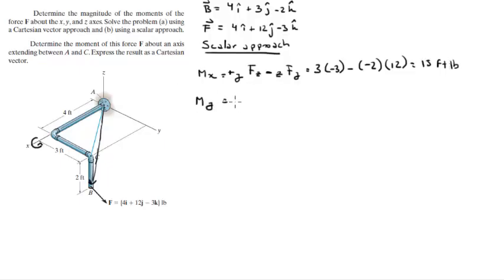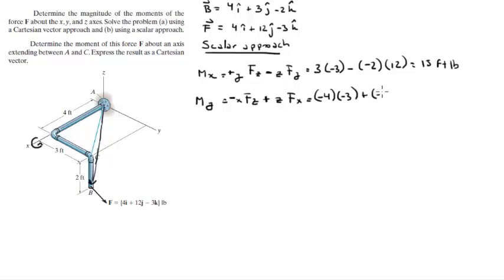For the moment about the y-axis, you use the x and z components. By the right-hand rule, one term is negative and the other is positive. Replacing the numbers: negative 4 times negative 3 minus negative 2 times 4 comes out to be 4 foot-pounds.